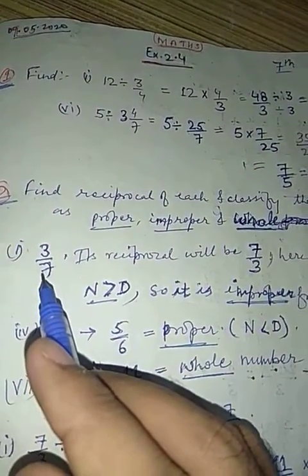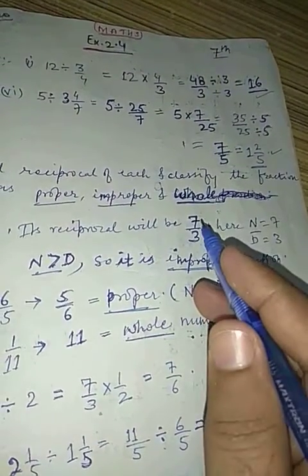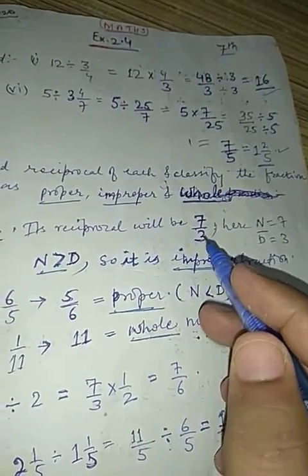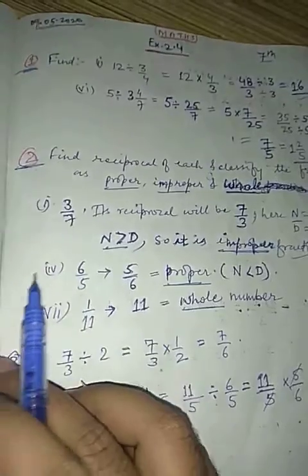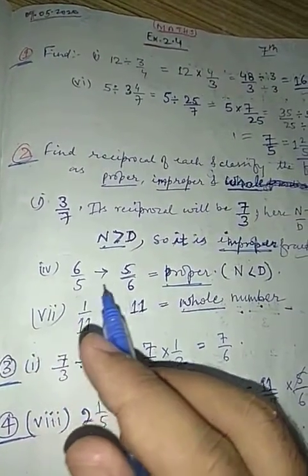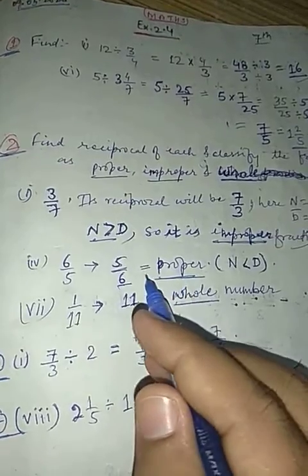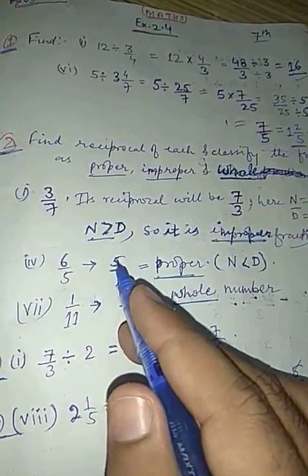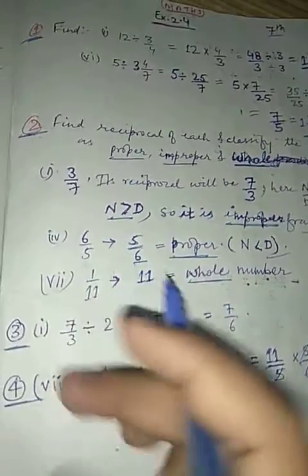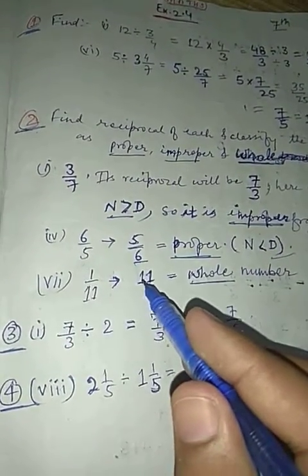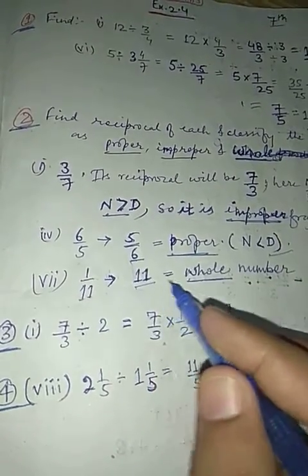3 upon 7, reciprocal is 7 upon 3. Here 7 is greater than 3, so numerator is bigger. It's an improper fraction. Similarly, question number fourth part: 6 upon 5, reciprocal is 5 upon 6. It is a proper fraction because numerator is less than denominator. 1 upon 11, reciprocal will be 11 upon 1, means 11. It is a whole number.